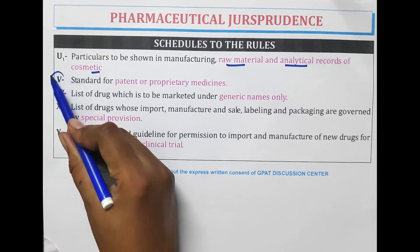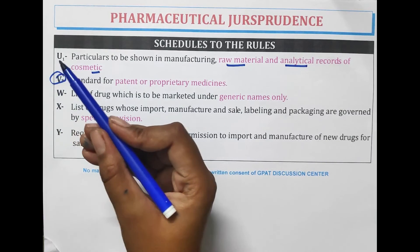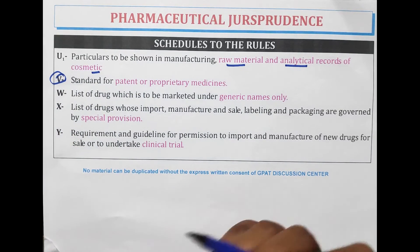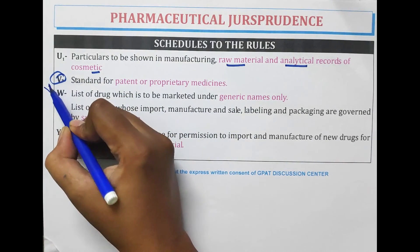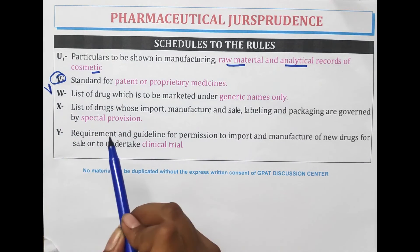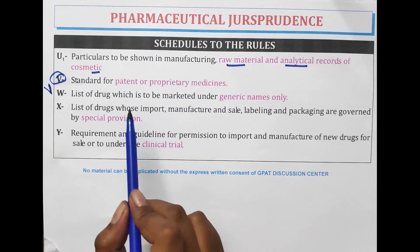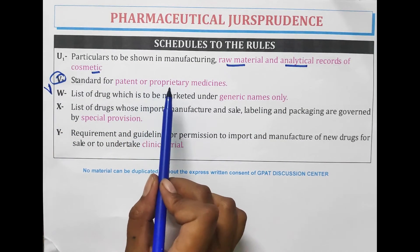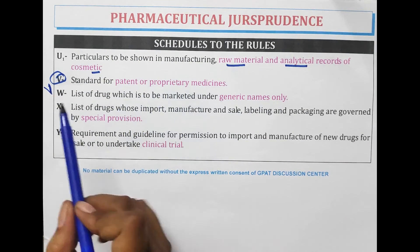Schedule V — for a pharmacist, the biggest victory is a patent. So Schedule V is the standard for patent or proprietary medicines.